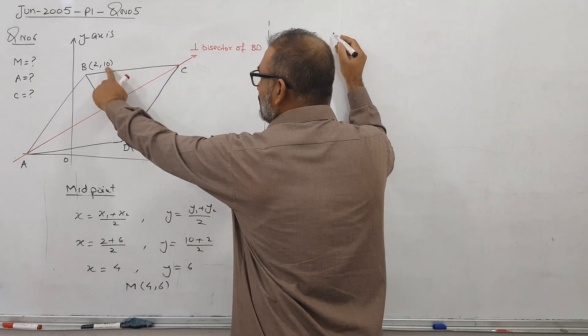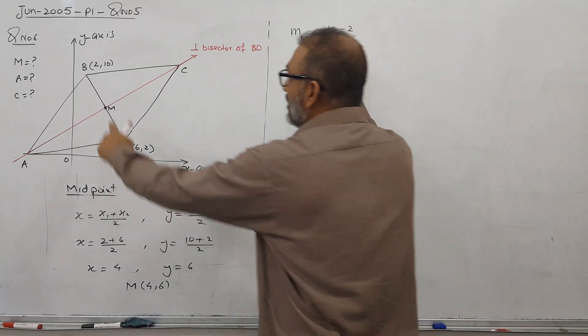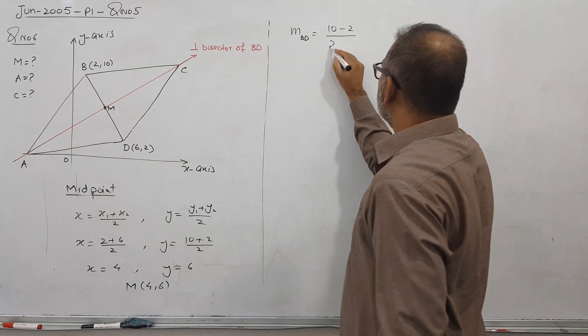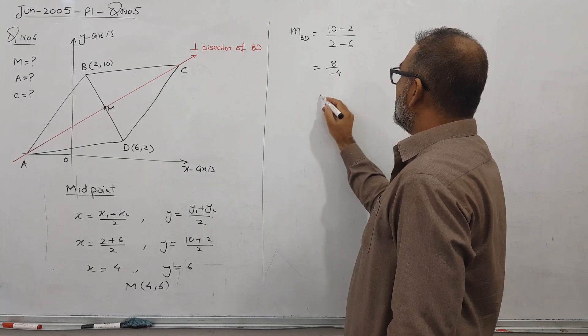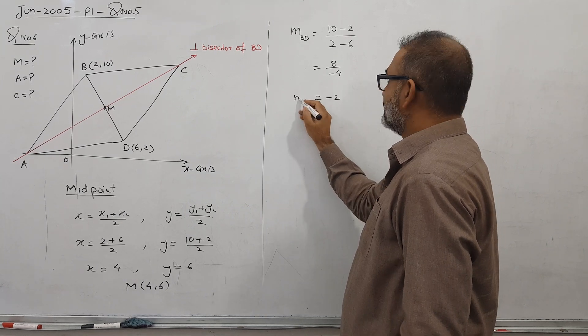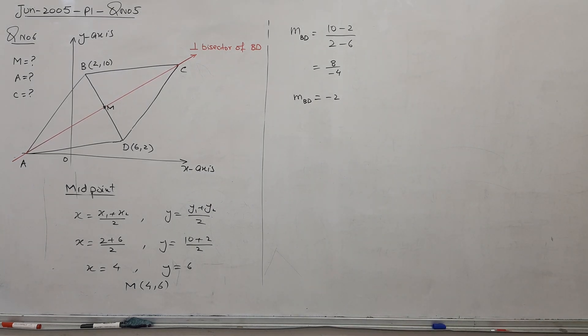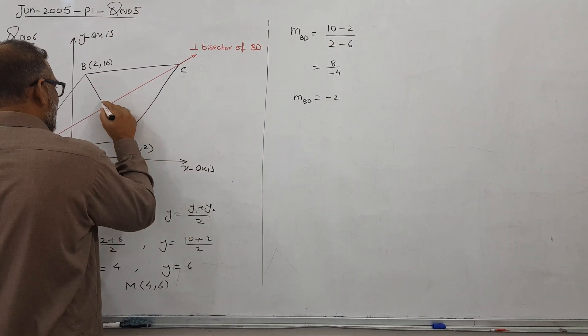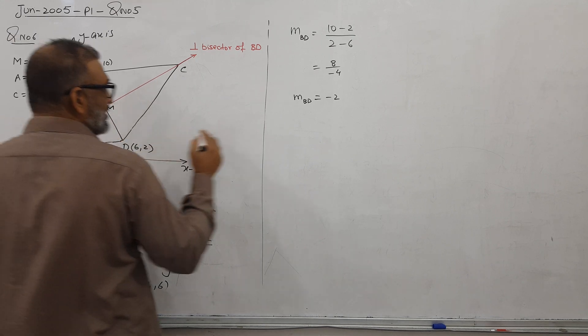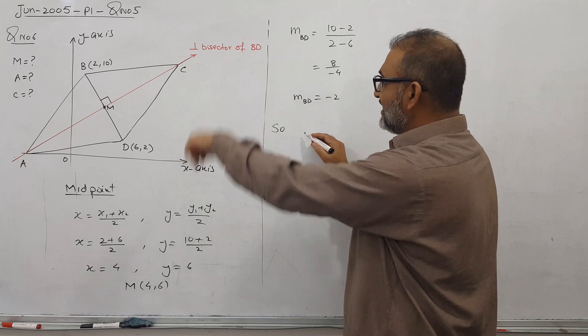So Y2 minus Y1 over X2 minus X1. So I am getting 8 minus 4. I am getting minus 2. So this much is okay. So we done gradient of BD. And as we know, they are perpendicular. Can you see here 90 degree? Yes, we have a 90 degree. So then what is a gradient?